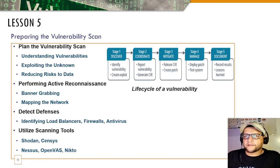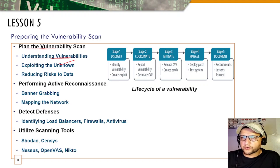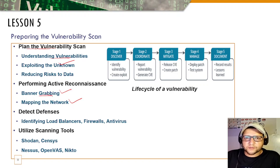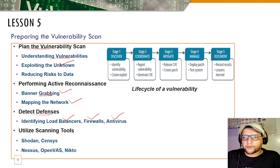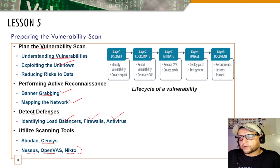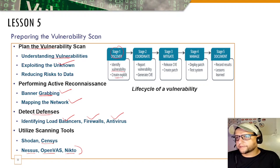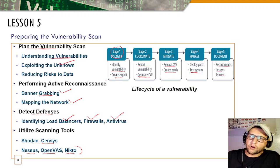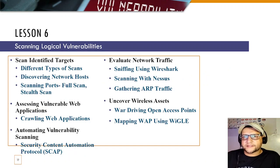Lesson 5 covers preparing a vulnerability scan — understanding loopholes, exploiting unknowns, and reducing risk to data. You'll do active reconnaissance, banner grabbing, mapping the network, detecting operating systems and their versions, identifying load balancers, firewalls, antivirus, and bypassing them. Tools used include Shodan, Censys, Nessus, OpenVAS, and Nikto. You'll also learn the vulnerability lifecycle: identifying/creating exploits, coordinating CVE reports, releasing patches, deploying and testing patches, and recording lessons learned.